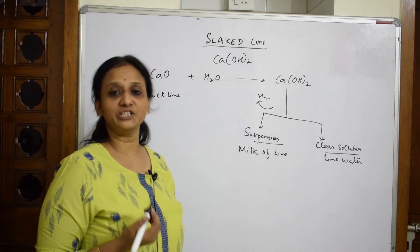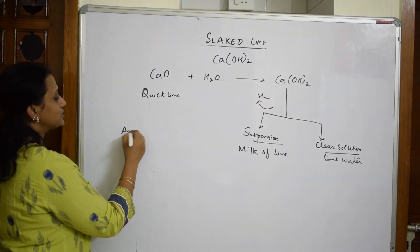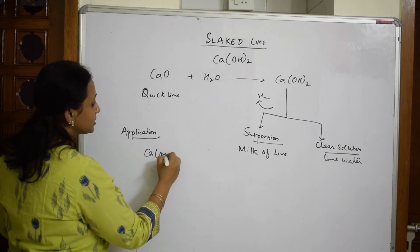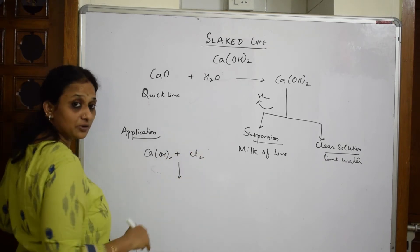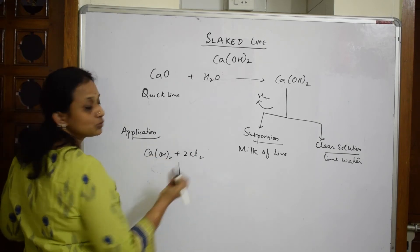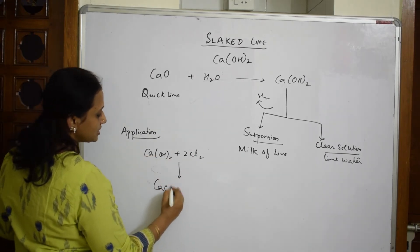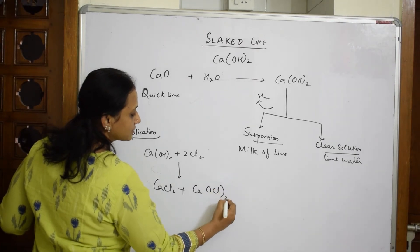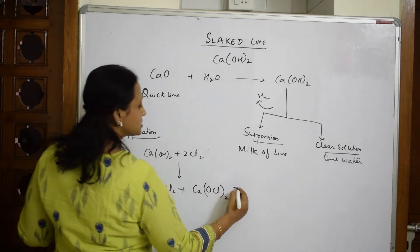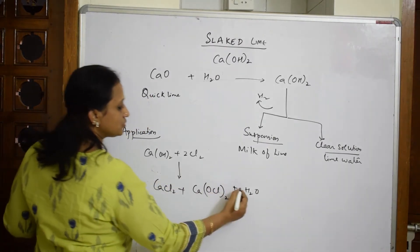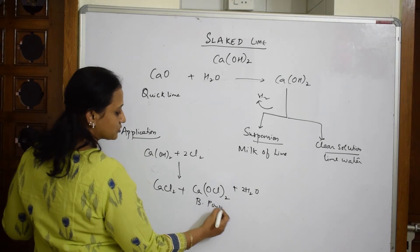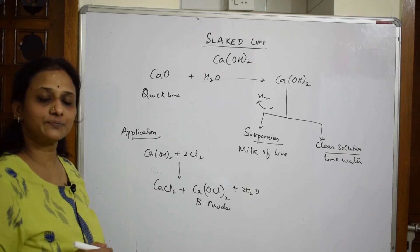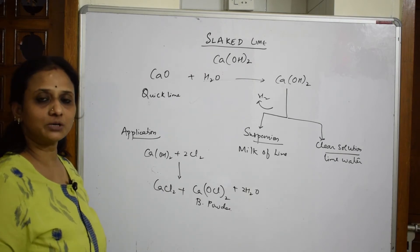An important application of slaked lime is preparing bleaching powder. Calcium hydroxide reacts with chlorine to form three products: calcium chloride (CaCl₂), calcium oxychloride (CaOCl₂), and water. This mixture is your bleaching powder.